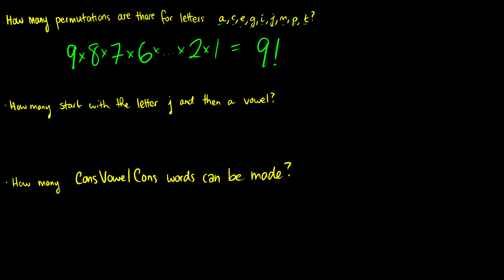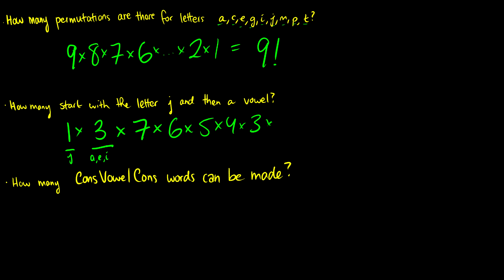Here's the next question: how many of these start with the letter J and then have a vowel? The first letter we have one choice because that's J. The next letter we can pick A, E, or I, so we have three choices for the second letter. Then we've used up two of these letters, so for the third choice we have seven remaining letters, then six, five, four, three, two, and one. So here we get 3 times 7 factorial choices.